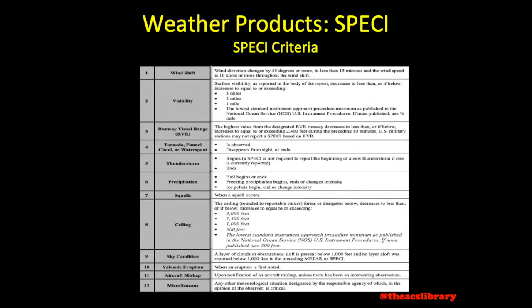Moving on to special weather reports or SPECIs — a SPECI will be issued for a number of items on Table 3-1 of Advisory Circular 00-45H. These items range from wind shifts to deteriorating visibility and sky conditions, to tornadoes, volcanic ash, and aircraft mishaps. SPECIs are presented in the same format as METARs.